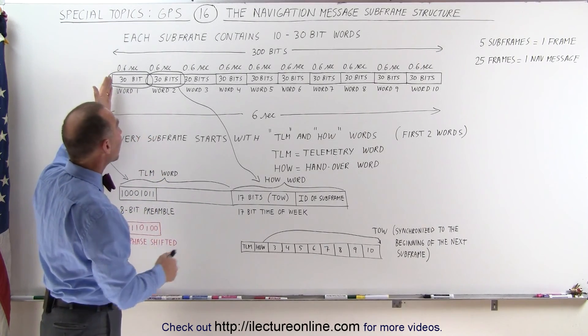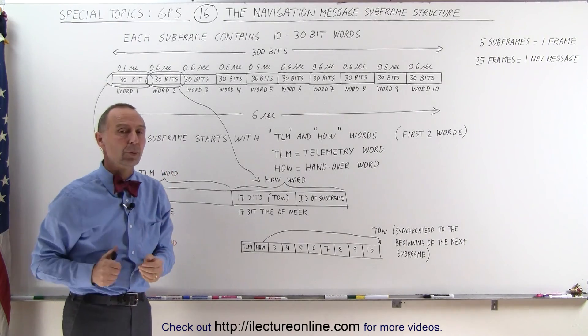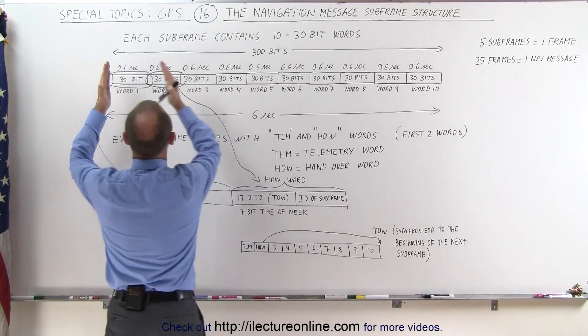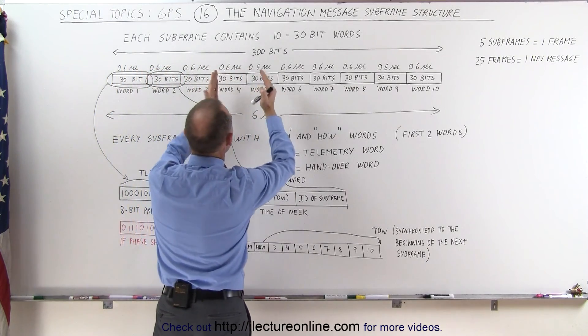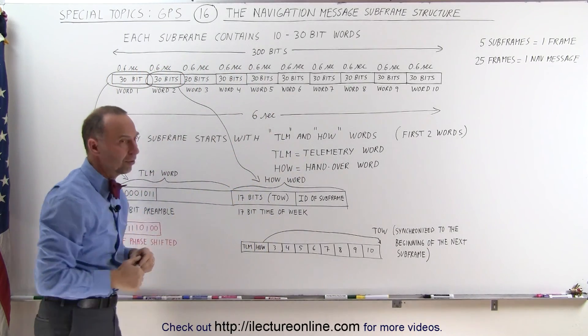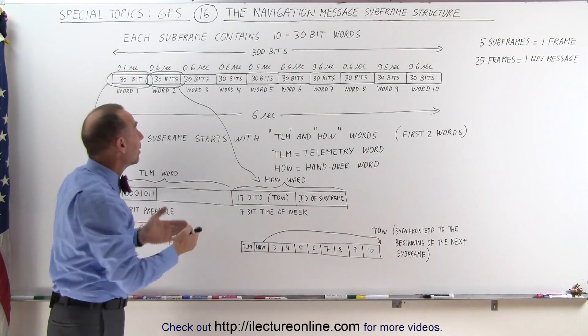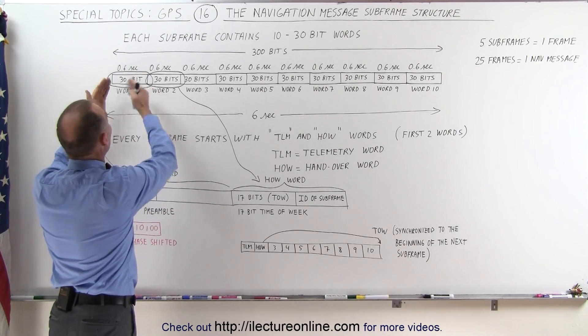Each subframe contains 10 30-bit words. So here you can say this is a structure of a subframe, and it's divided into 10 words, each word containing 30 bits. Since it takes 6 seconds to send a subframe, that means that each word takes 0.6 seconds.